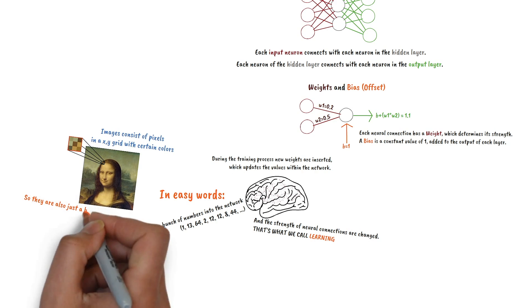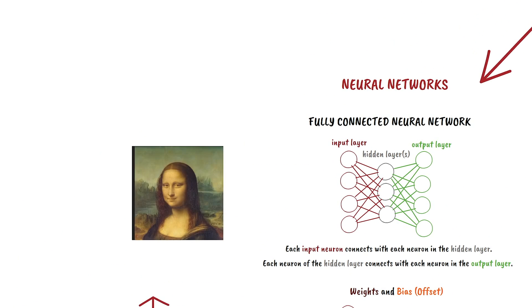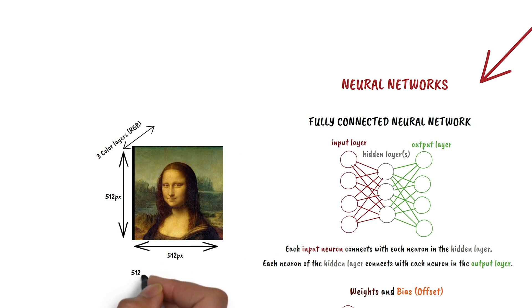Now we can see images as a grid of pixels with certain color values, so they are also just a bunch of numbers. An image with a size of 512 by 512 pixels and three color layers, red, green, blue, can be stored in some 700,000 neural connections.